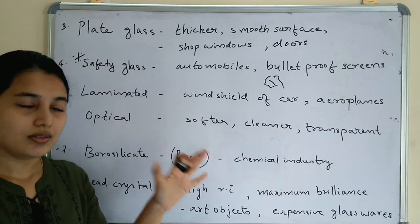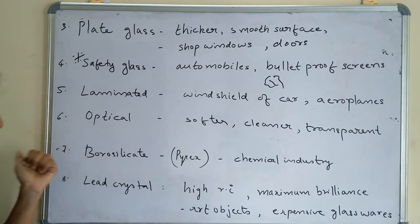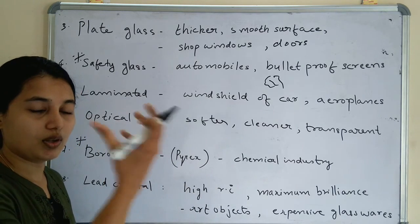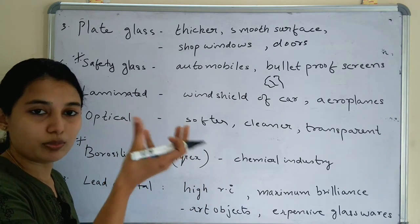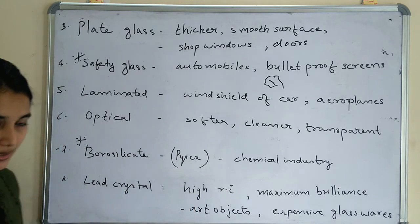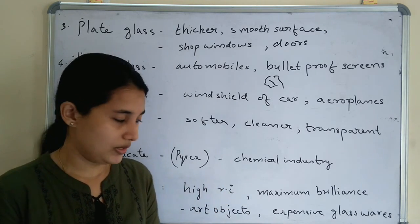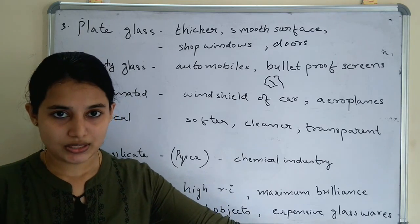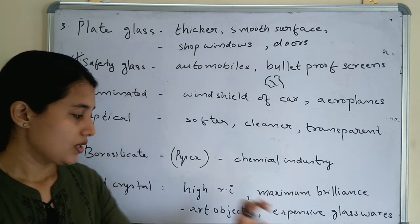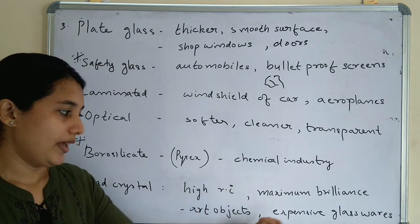The sixth type is optical glass, used in lenses, prisms, etc. It is softer, cleaner, and very transparent. The seventh type, and also important, is borosilicate glass (also known as Pyrex). It is used in the chemical industry — the conical flasks and instruments used in chemical labs are made of borosilicate glass. The eighth type is lead crystal glass, which has a high refractive index and maximum brilliance. It is very transparent, very expensive due to the use of lead, and is used for art objects and expensive glasswares.